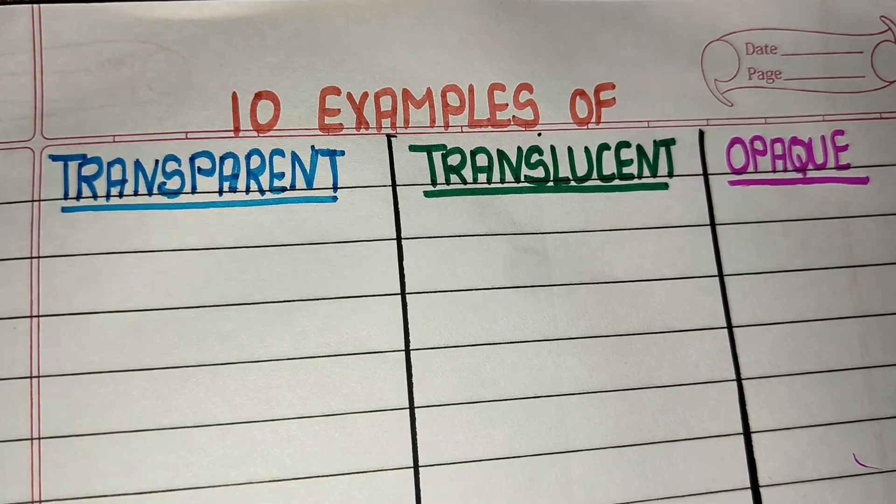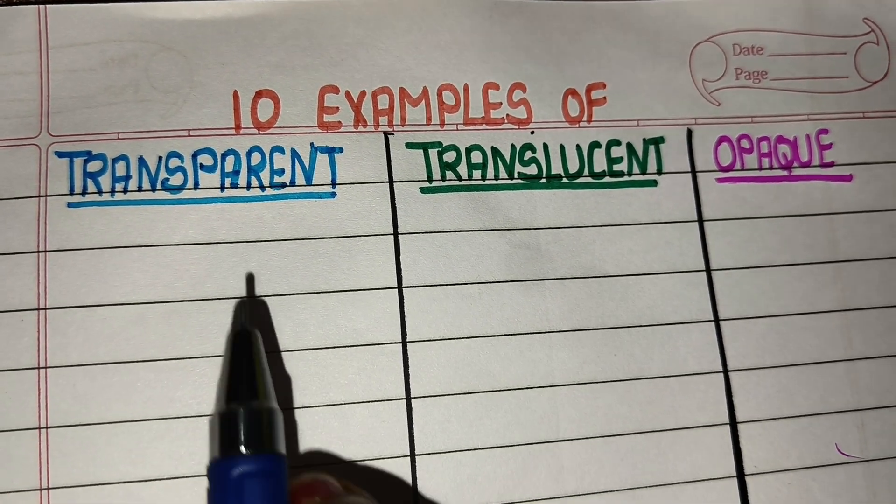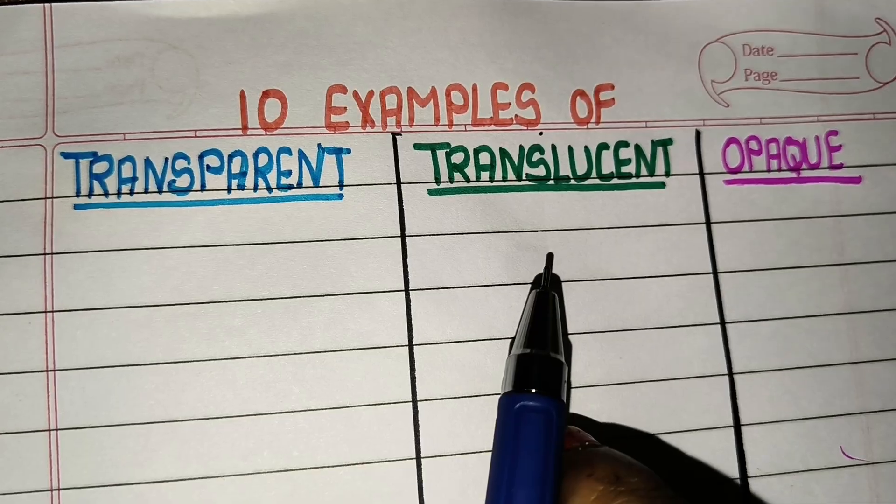Hello friends, welcome to Triankush Learning Channel. Today we are going to learn and write 10 examples of transparent, translucent, and opaque materials.